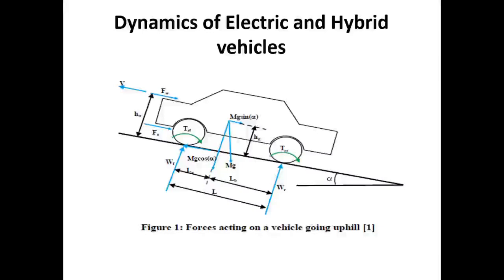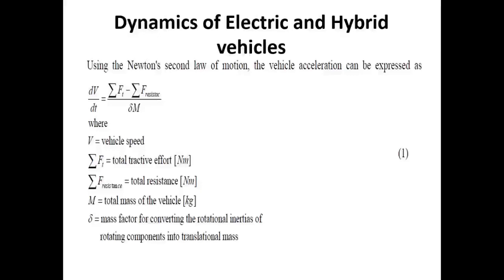This is the diagram showing the forces acting on a vehicle going uphill. TRF is the tractive effort exerted by the front wheel and TRR is the tractive effort exerted by the rear wheel. Using Newton's second law of motion, vehicle acceleration can be expressed as: dv/dt = (ΣFt − ΣF_resistance) / (δm), where v is the vehicle speed, ΣFt is the total tractive effort, ΣF_resistance is the total resistance, m is the total mass of the vehicle, and δ is the mass factor for converting rotational inertia of rotating components into translational mass.